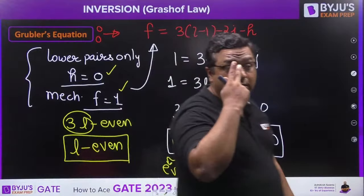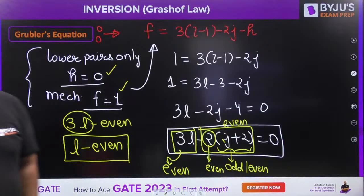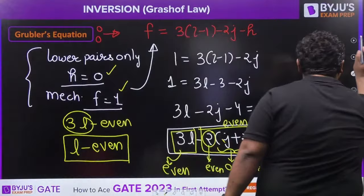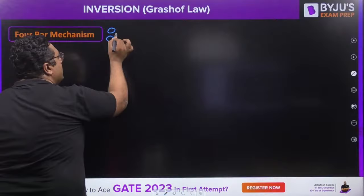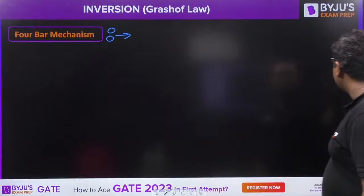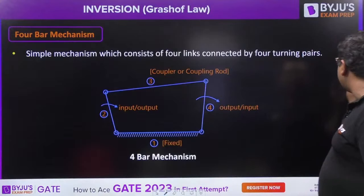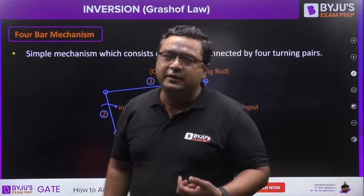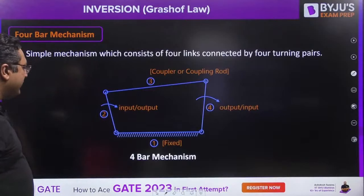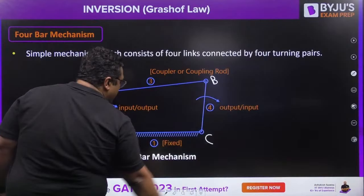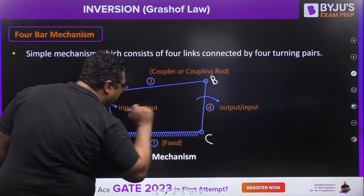Now we are moving to Grashof's law. To understand Grashof's law, first let us see the four-bar mechanism. A simple four-bar mechanism looks like this with points O, A, B, and C — giving us link 1, link 2, link 3, and link 4. To make a mechanism from a kinematic chain, you need to fix one link. I will give you an analogy to help you understand Grashof's law.